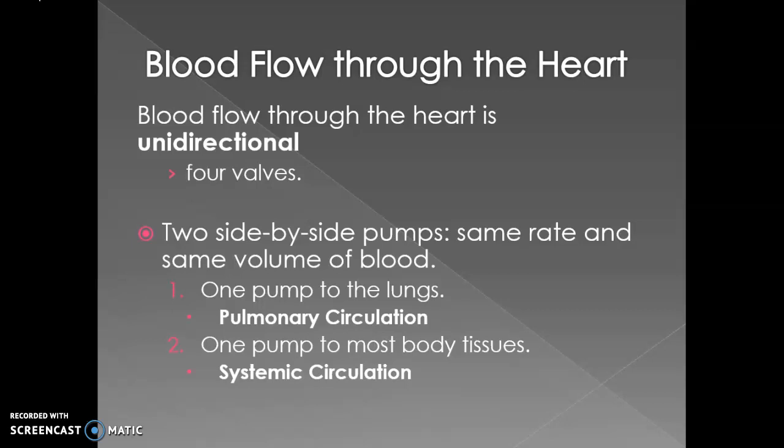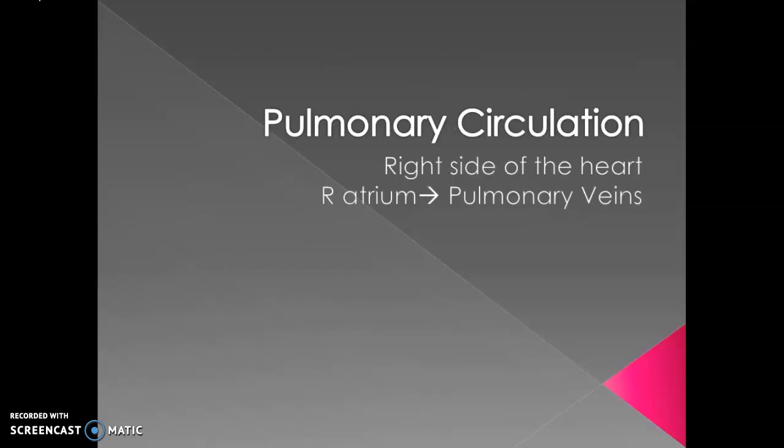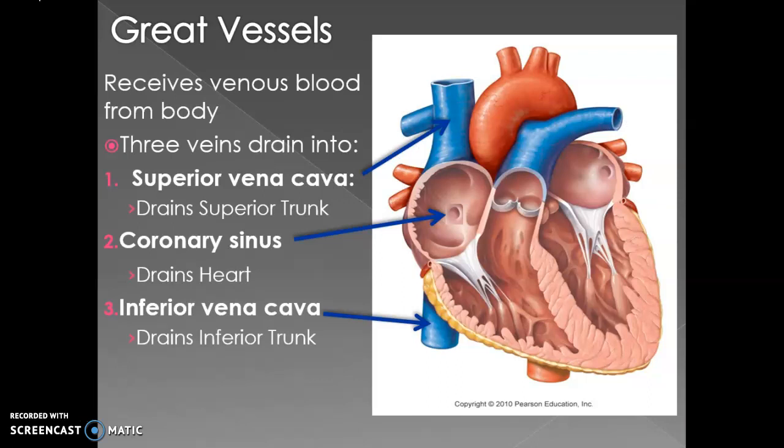The heart works as a two-sided pump — the left side is one pump and the right side is one pump, and both sides pump out the same volume of blood at the same time. The right side is responsible for pumping blood to the lungs, which is associated with pulmonary circulation. The left side pumps blood to the rest of the body, which is associated with systemic circulation. We will now focus on the structures from the right atrium all the way through the pulmonary valves, pulmonary trunk, and pulmonary veins to the left atrium.